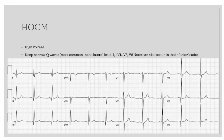So what exactly do you look for on your 12-lead? The two things that you look for for HOCM are high voltage and deep narrow Q waves. These are going to be most common in the lateral leads — so leads 1, AVL, V5, V6. Sometimes they can occur in 2, 3, AVF in your inferior leads. So when I say deep narrow Q waves, I'm talking about this right here — deep narrow Q waves.